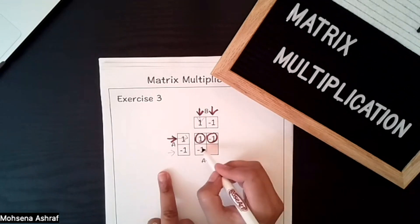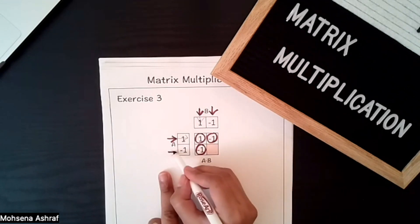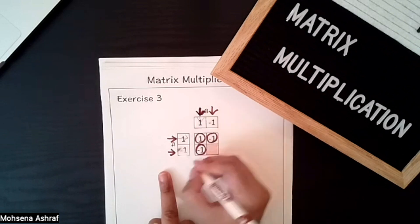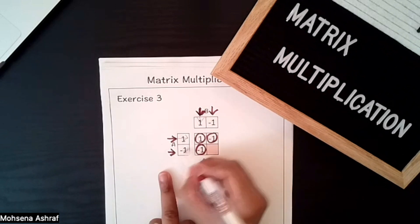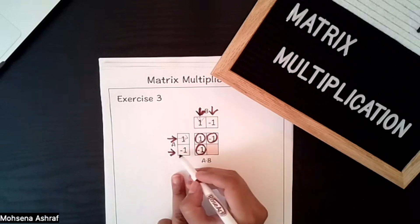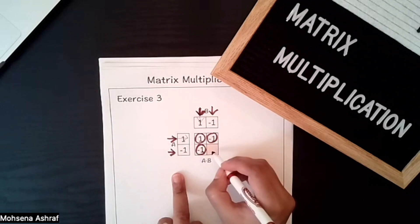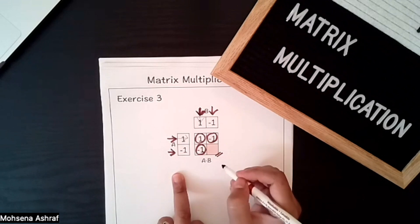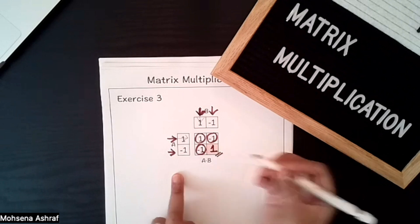For the next field we multiply the second row with the first column: (−1)×1 = −1. And for the last field, second row with the second column: (−1)×(−1) = +1.